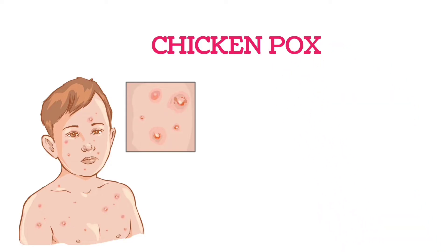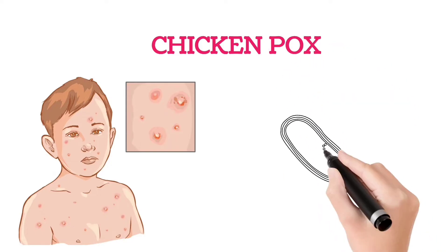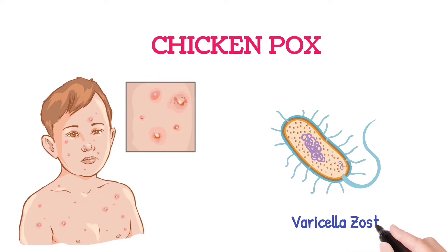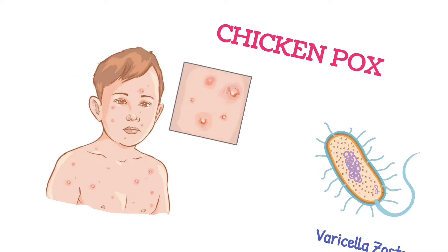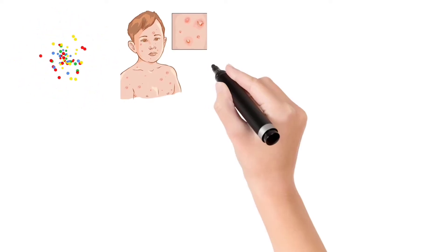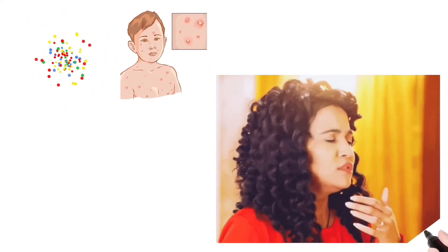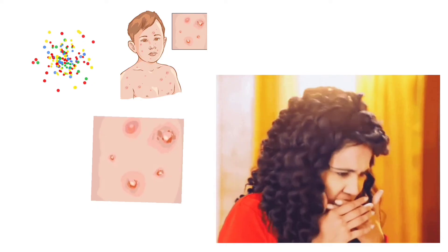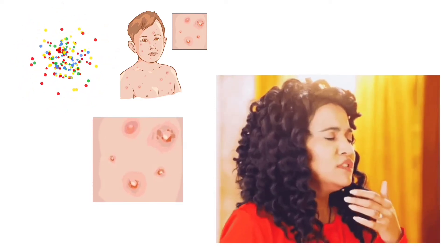Chickenpox is a viral infection which is caused by a virus called varicella zoster. This chickenpox is spread by the airborne route. When the virus is present in the air, or if the infected person coughs or sneezes, or by contact with the ruptured vesicle, this virus enters the body.